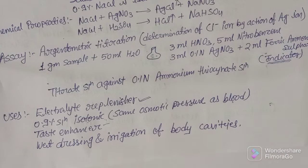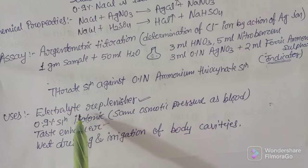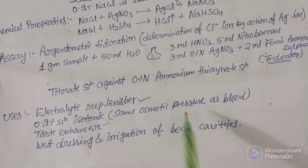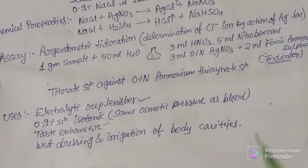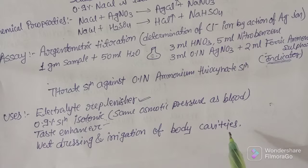Uses of sodium chloride: it is used for electrolyte replacement, as sodium has a major role in physiological balance. The 0.9 percent solution is isotonic — compatible with blood — hence it is used as normal saline. It is also a taste enhancer, useful in wound dressing and surgical dressing, and also useful for irrigation of different body cavities. It has huge and important roles in the field of medicine.